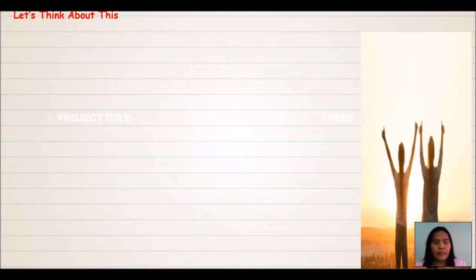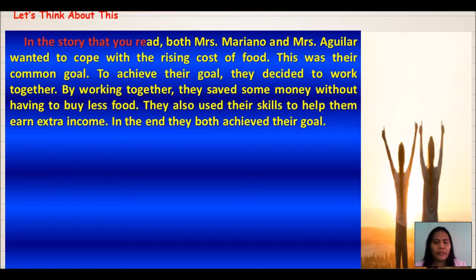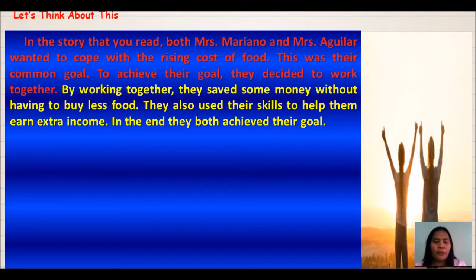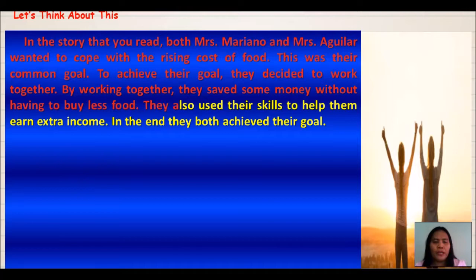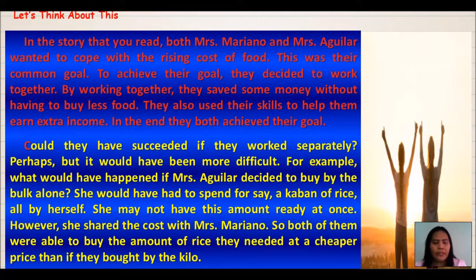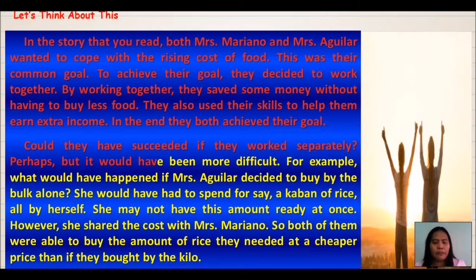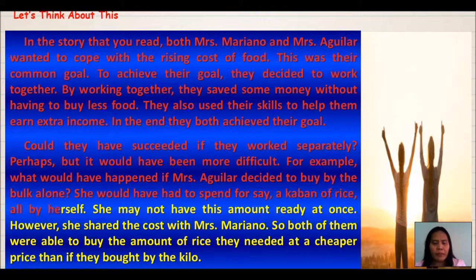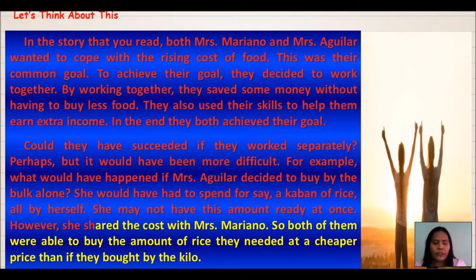Let's think about this. In the story, both Mrs. Mariano and Mrs. Aguilar wanted to cope with the rising cost of food — that was their common goal. By working together, they saved money without buying less food, and used their skills to earn extra income. Could they have succeeded working separately? Perhaps, but it would have been more difficult. For example, if Mrs. Aguilar had bought a cavan of rice alone, she might not have had the full amount ready. By sharing the cost with Mrs. Mariano, both got rice at a cheaper price than buying by the kilo.